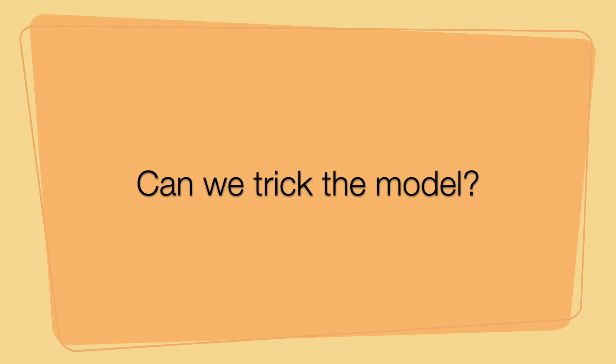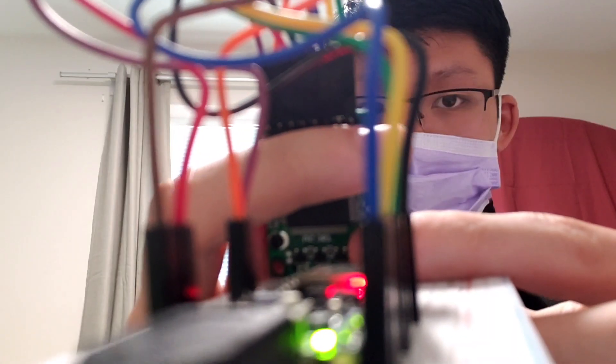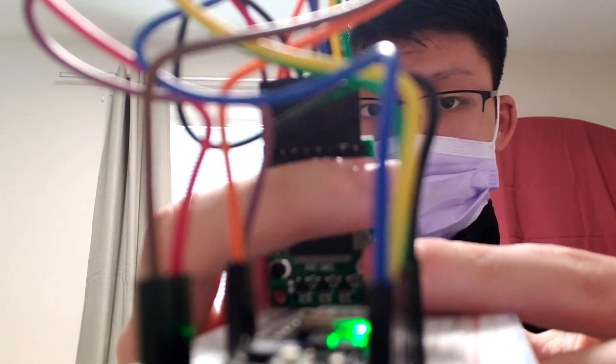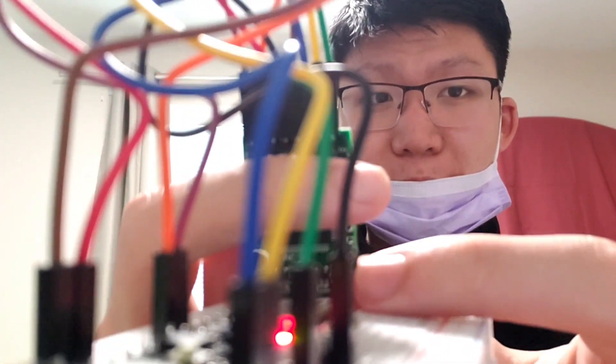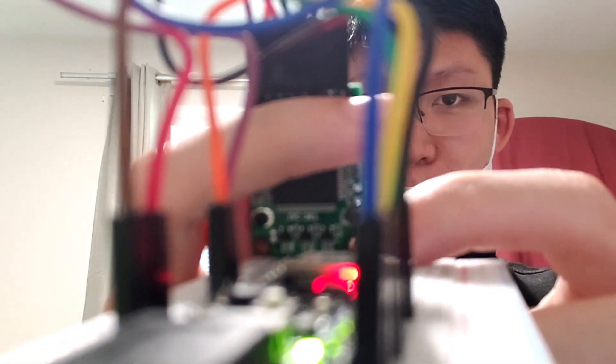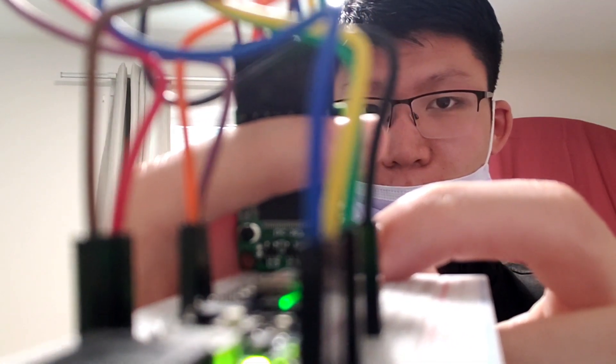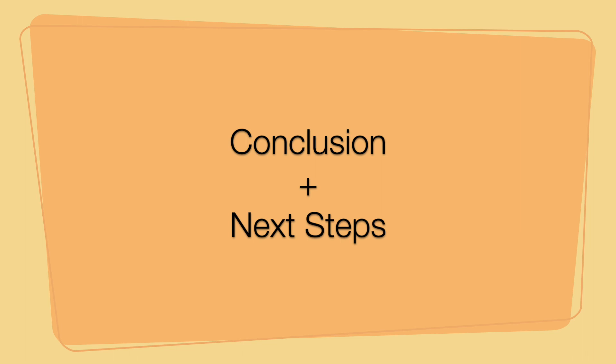Now let's see if we can trick the model into thinking we're wearing a face mask when we're not wearing it properly. When I take the face mask below my nose, it's red — but sometimes it's green as well. So the model is confused when we try to trick it. To improve this we can give even more adversarial examples of cases where we're deliberately trying to trick it. However, Flickr doesn't have many good examples of these, so that would require more resources and more time.